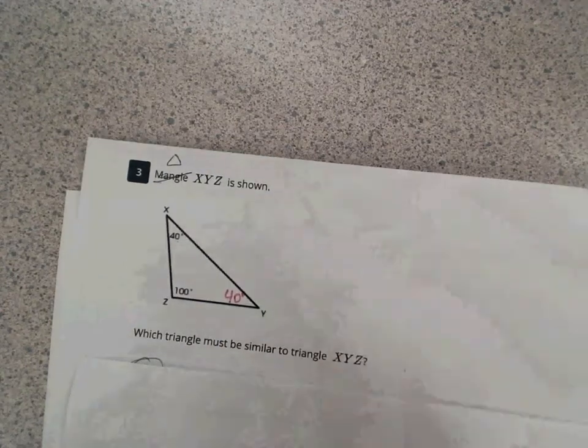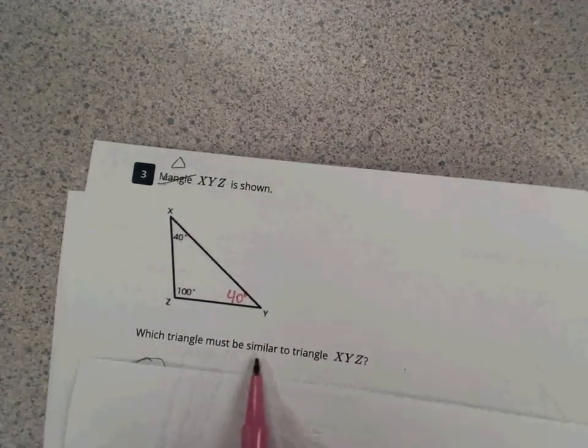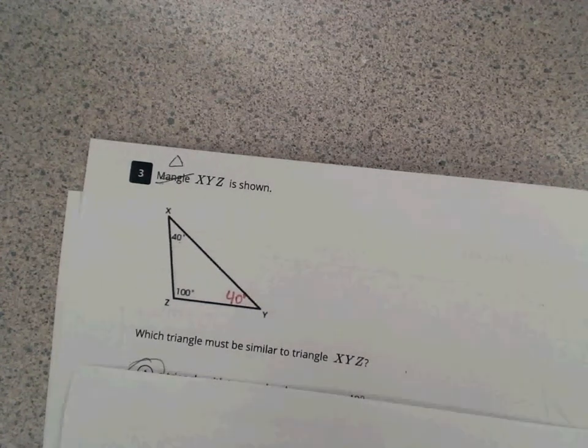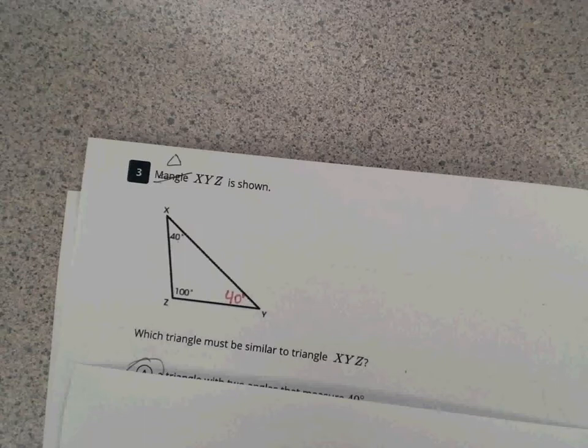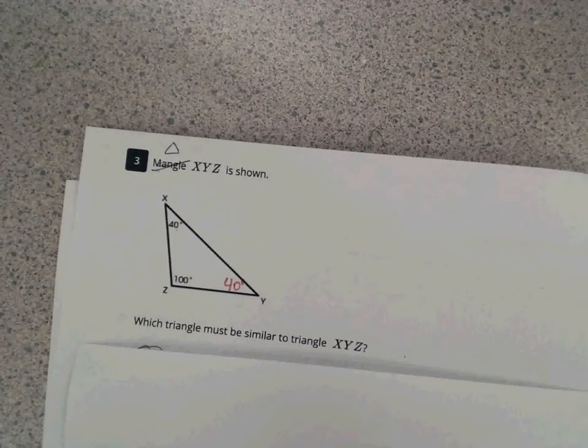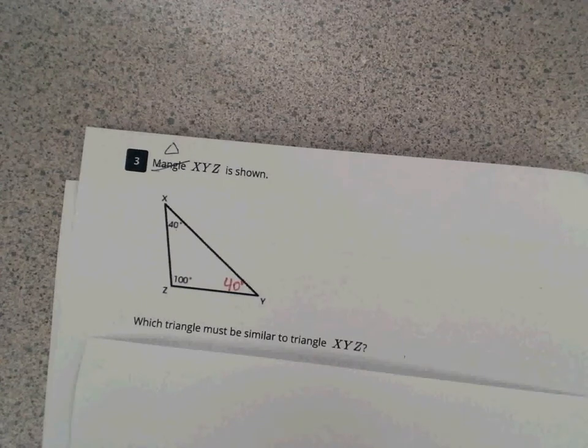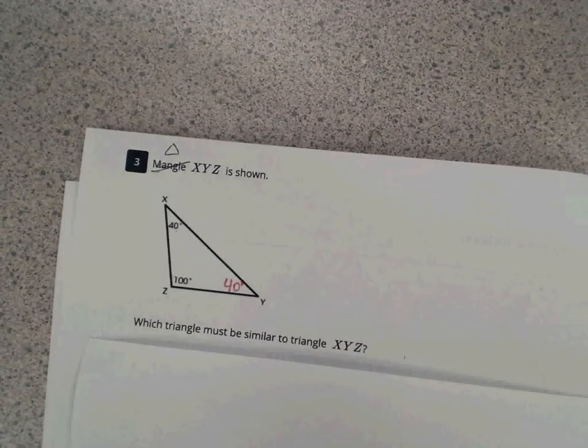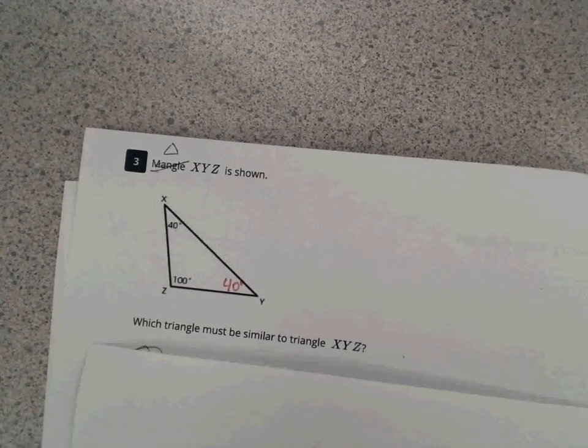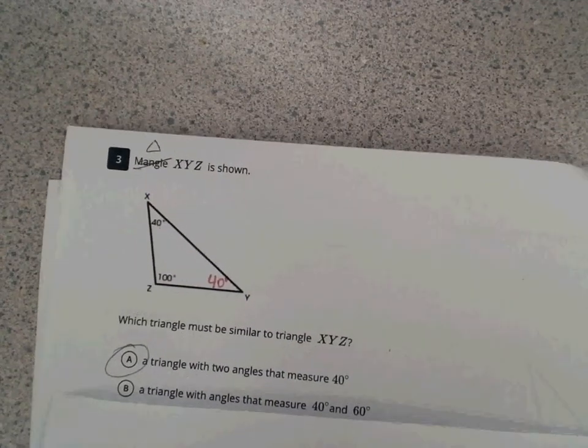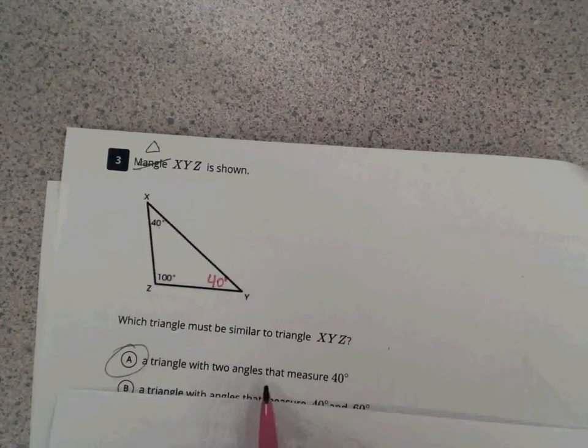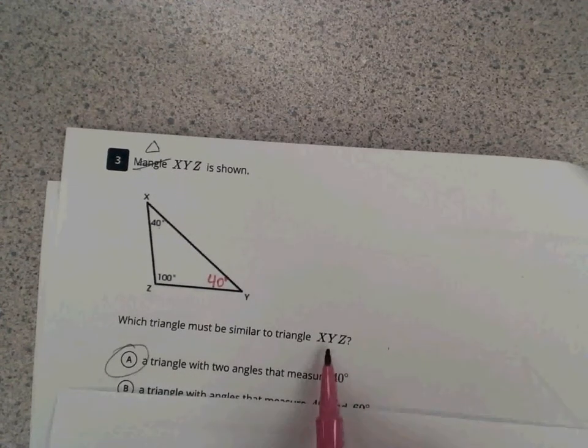So which triangle measure must be similar to triangle XYZ? So there's several different ways to prove that, but here we only have angles. And one of our properties says that if two angles of a triangle are congruent to two angles of another triangle, the two triangles are similar. It's the angle-angle postulate. And so a triangle with two angles that measure 40 degrees would definitely be similar to this given XYZ triangle.